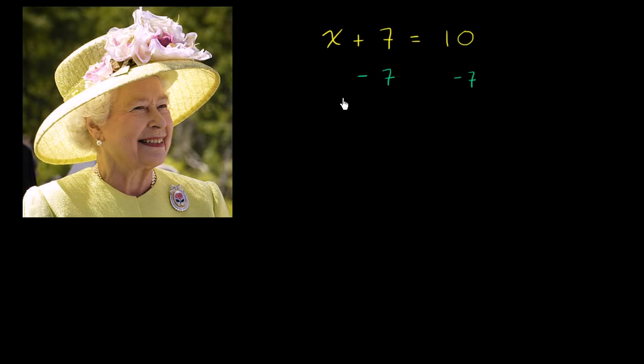And so what we're going to be left with is x, and then the 7s cancel out, is equal to 10 minus 7, which is equal to 3. So that unknown is 3. You can verify it: 3 plus 7 is indeed equal to 10.